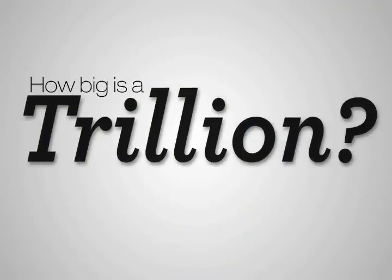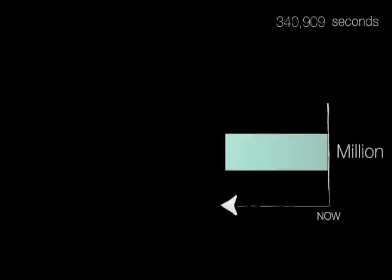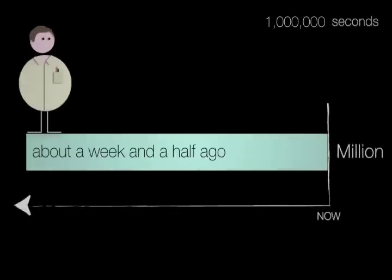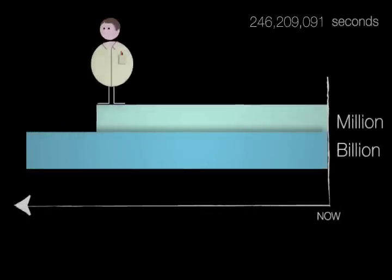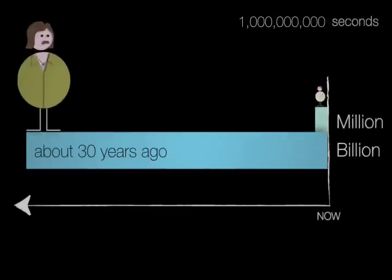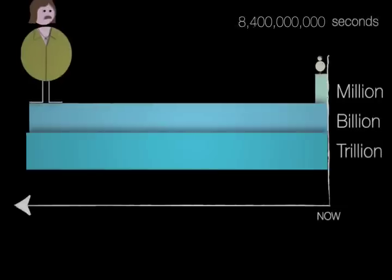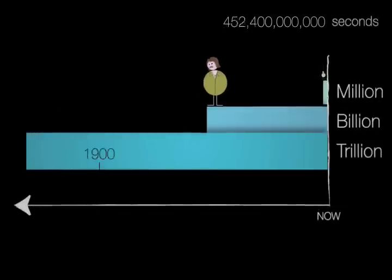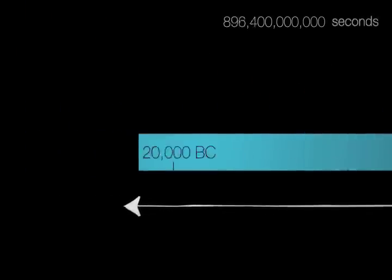So, how big is a trillion? Well, let's count back in seconds. Go back a million seconds. That's like maybe a week and a half ago. Go back a billion seconds. Well, that brings us back to the mid-1970s. Alright, now go back a trillion seconds. How far back do you think that is? Well, you know, it turns out that it's over 30,000 years ago.